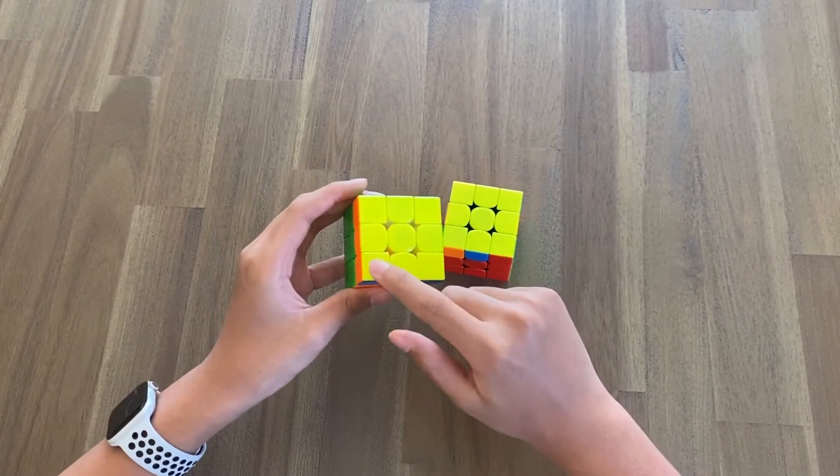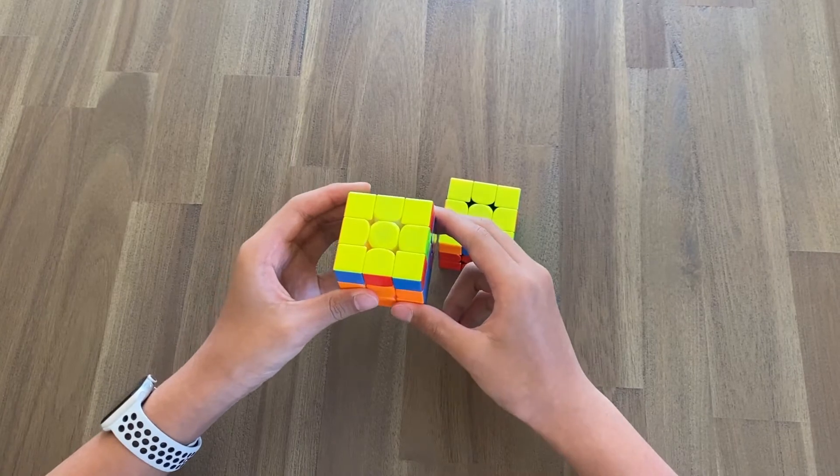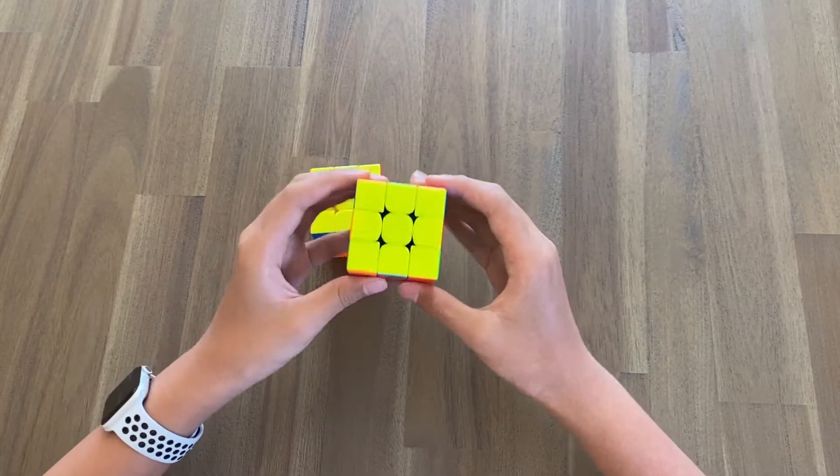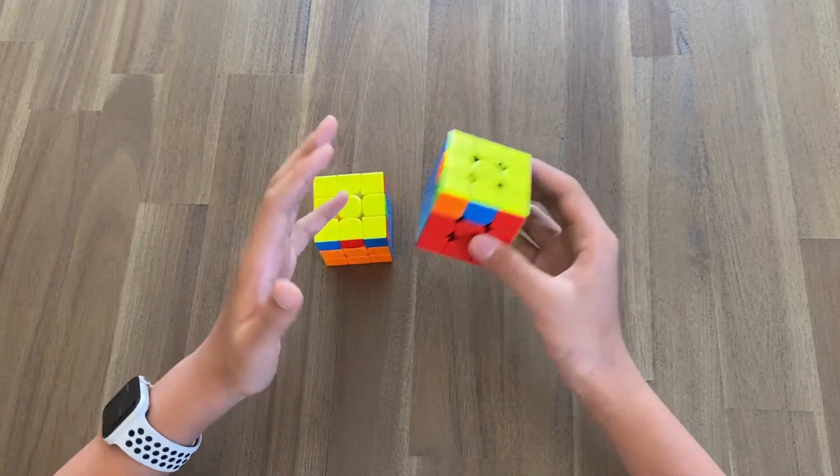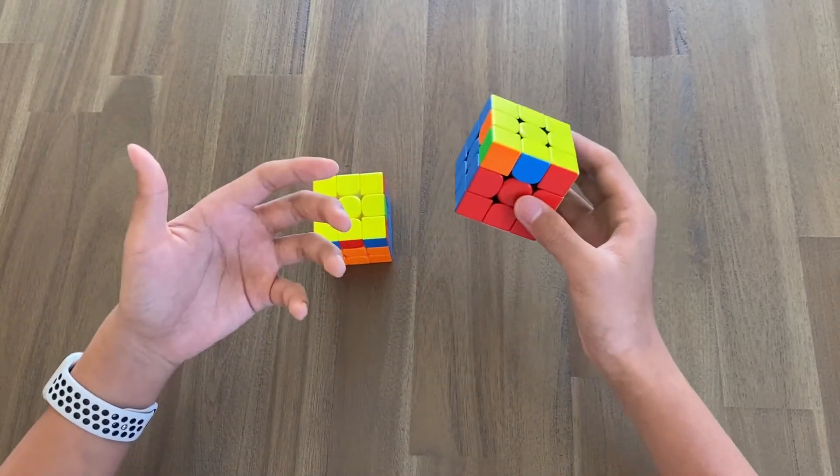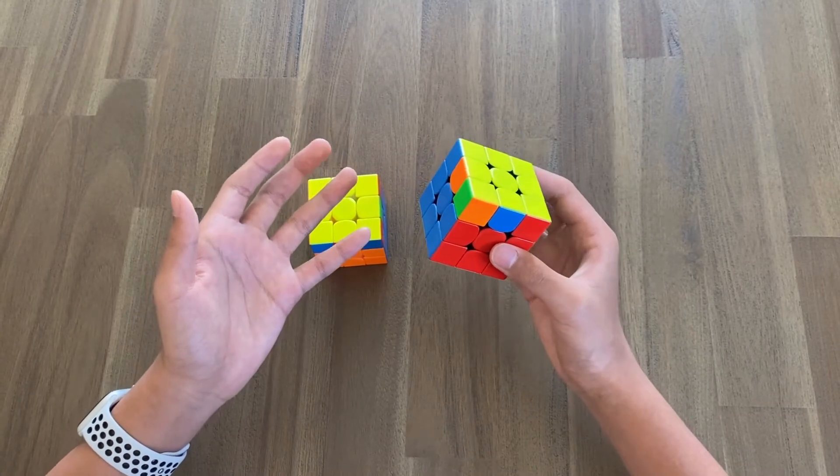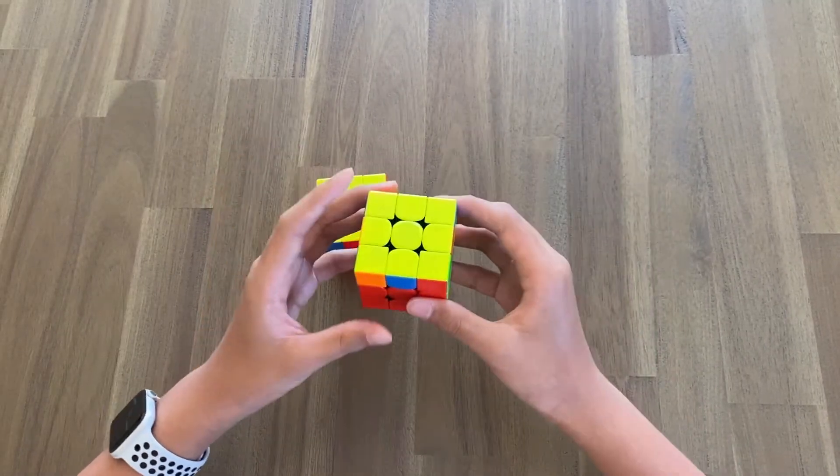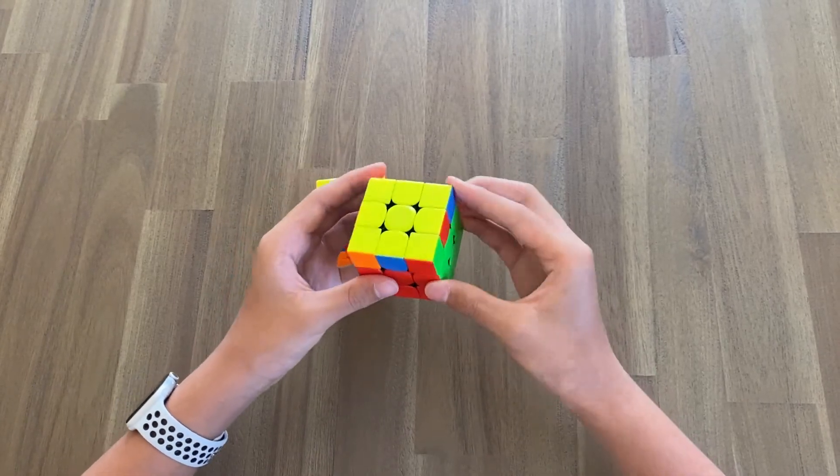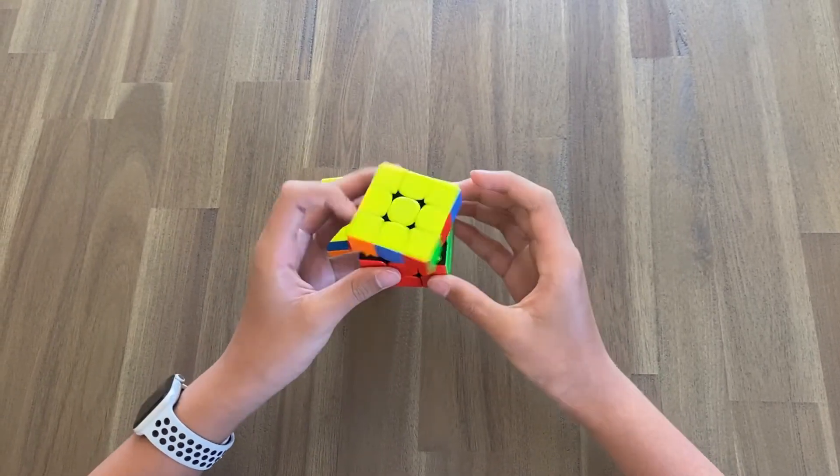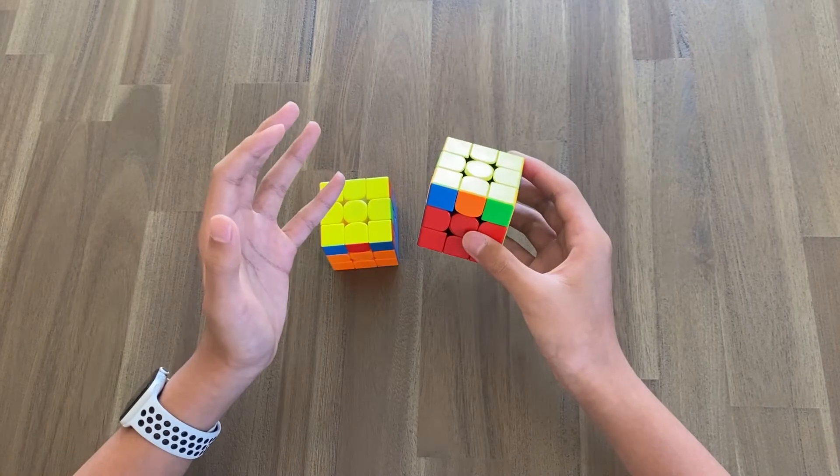As you can see, all four corners are now solved. However, if your corners are diagonal from each other, this algorithm will not work. You'd have to do that algorithm twice, which is not very efficient—that can be like three-look PLL and you don't want that.